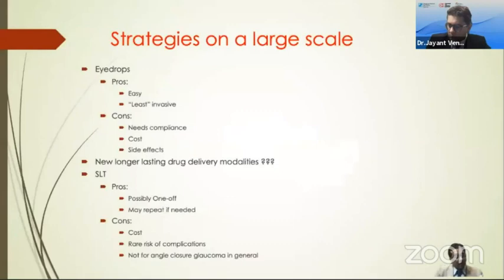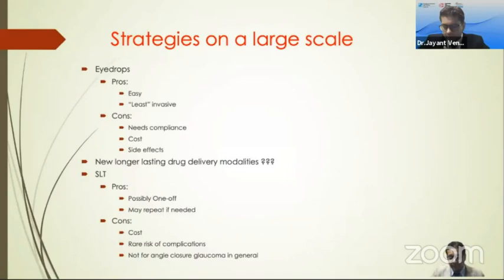What about treatment options? When you have glaucoma, what next? Eyedrops would be the easiest and least invasive, but they require compliance and adherence, have side effects, and need regular follow-up and uptake for life — a challenge especially in larger population groups. Selective laser trabeculoplasty, SLT, has shown promise, especially in the recent LIGHT trial. It has relatively good efficacy in open-angle glaucoma, may be a one-off procedure, but there are costs associated with it and you need a certain skillset to perform SLT. It is already being looked at in various parts of sub-Saharan Africa.